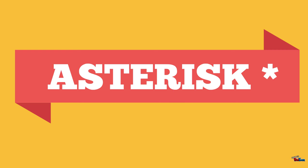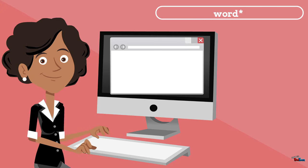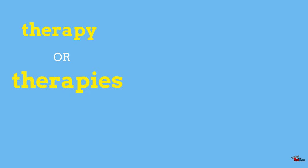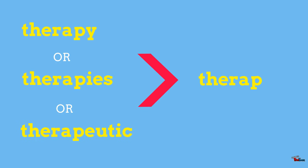The asterisk is another important tool used in searching. It is a way in which we can take into consideration the many different ways we can express a word. So instead of having to tell the database to search for documents containing the words therapy, therapies, or therapeutic, we can simply truncate the word after the last shared letter — in this case, 'p' — and add an asterisk.